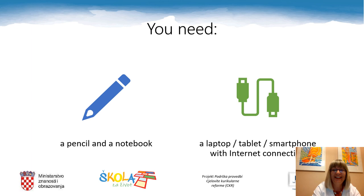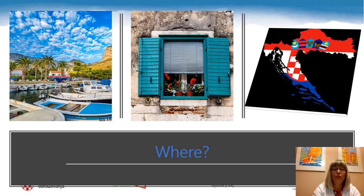Let's start. I'd like you to observe these pictures. Where are the first two photos taken? What do you think? Probably you'll agree with me and say that they are taken somewhere along the coast. And what is the name of the town in the photo? Let's guess. Probably it's a small town near Makarska.